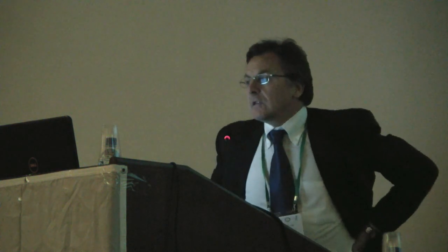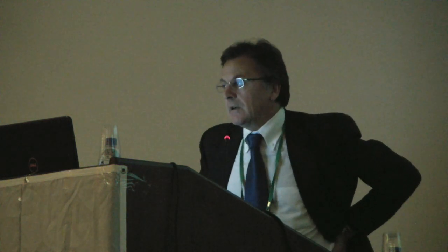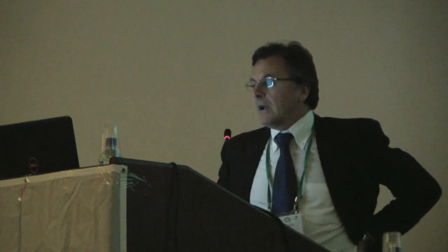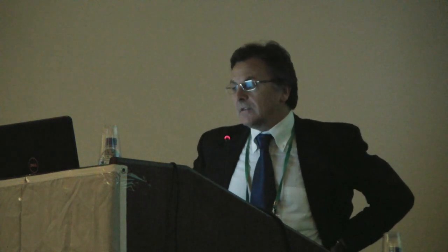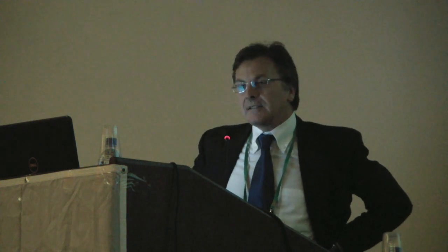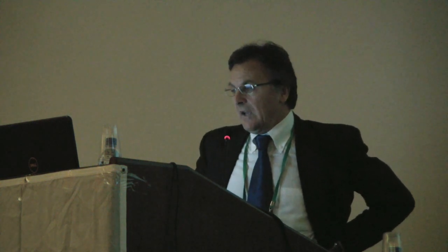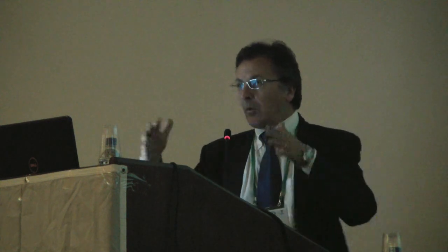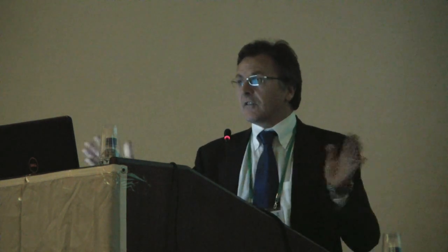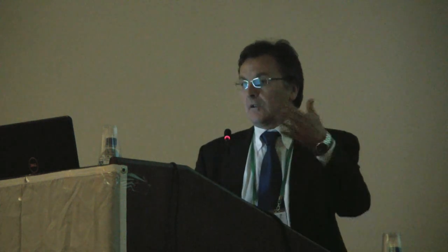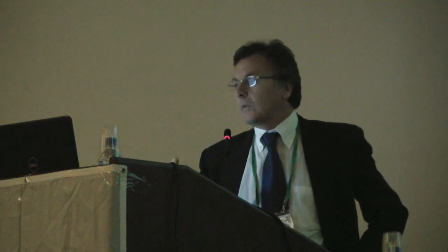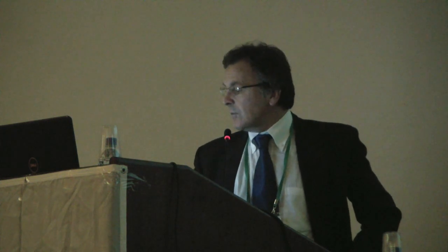The major wheat mycotoxins occurring in Europe are definitely the trichothecins, but to a lesser extent you can also find fumonisins and moniliformin, and enniatins, and cyclopeptides, and beauvericin. So it is quite a wide range of mycotoxins with different chemical structures and different targets, as you have heard in the previous talk.